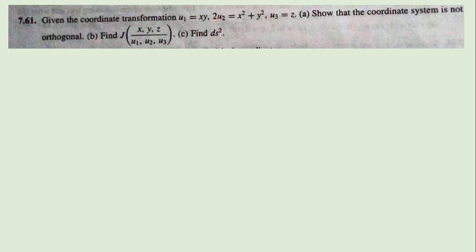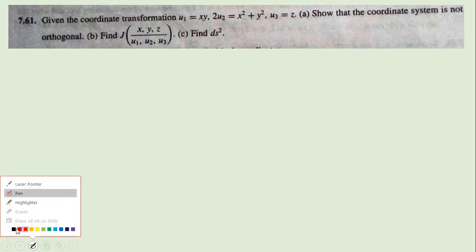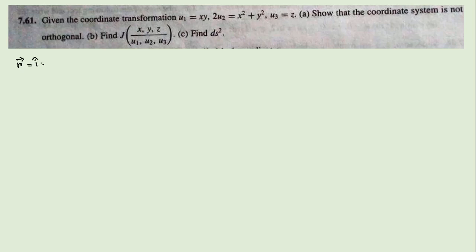The question gives a coordinate transformation u1, u2, and u3, and we need to check whether the coordinate system is orthogonal or not. To check orthogonality, you must find the unit vectors along each coordinate. For that, you evaluate the r vector: r vector equals i-cap x plus j-cap y plus k-cap z, and you need to change x, y, z into terms of u1, u2, and u3.